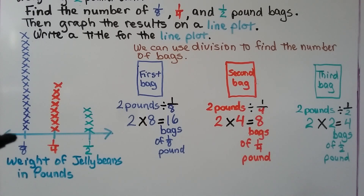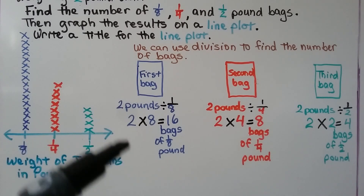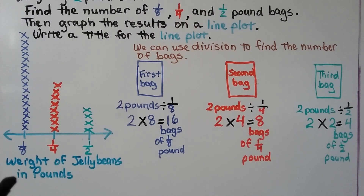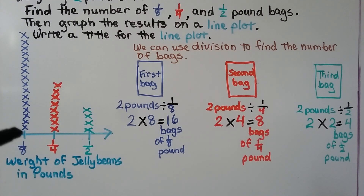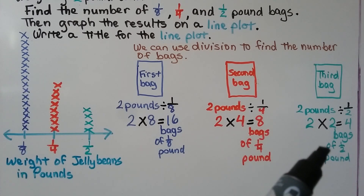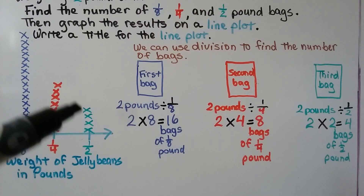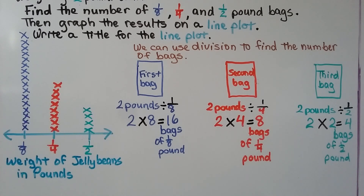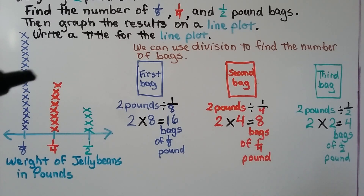On our line plot, we have increments of one-eighth, one-fourth, and one-half. We title it 'Weight of Jelly Beans in Pounds.' There were 16 of the one-eighth pound bags, so we put 16 marks. There were eight of the one-fourth pound bags, so we put eight marks. And there were four of the half-pound bags, so we put four marks. We can easily see there were a lot of one-eighth pound bags and far fewer half-pound bags.